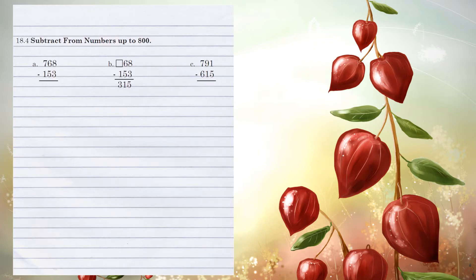Unit 18.4: Subtract from numbers up to 800. Example B. Let's start with the 1's just to check: 8 minus 3 is 5. In the 10's column, 6 minus 5 is 1. So what would we have to subtract 1 from to equal 3? Our missing number is 4.